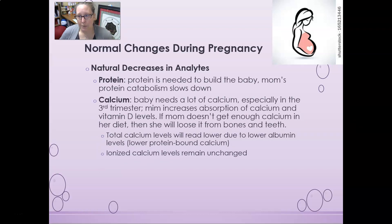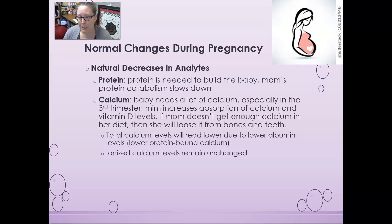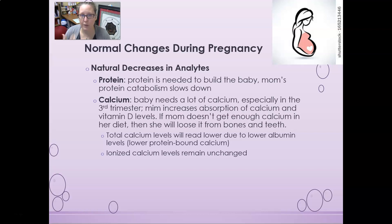Protein is needed to build a baby, so mom's protein catabolism will slow down and she will try to conserve protein, though protein levels may appear slightly lower in mom's blood. The baby also needs a lot of calcium, especially in the third trimester as it solidifies its bones. Mom increases absorption of calcium and vitamin D; if she doesn't get enough calcium in her diet, she will lose it from her bones and teeth. Total calcium levels will be lower due to lower albumin, meaning less protein-bound calcium, but ionized calcium levels remain unchanged — that is the functional calcium that is actually doing the job.